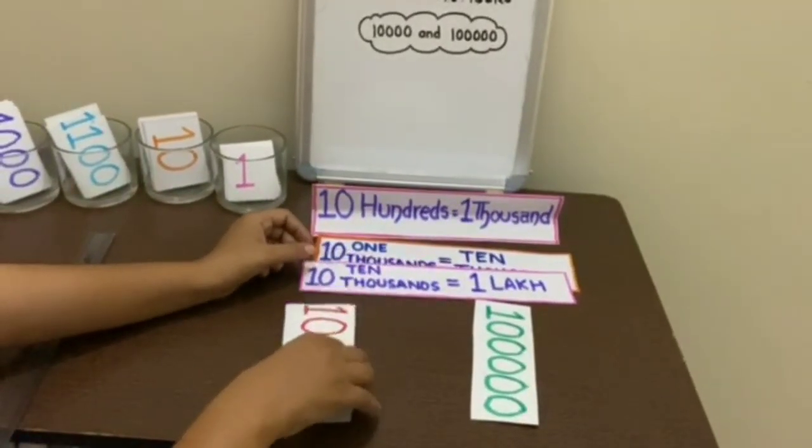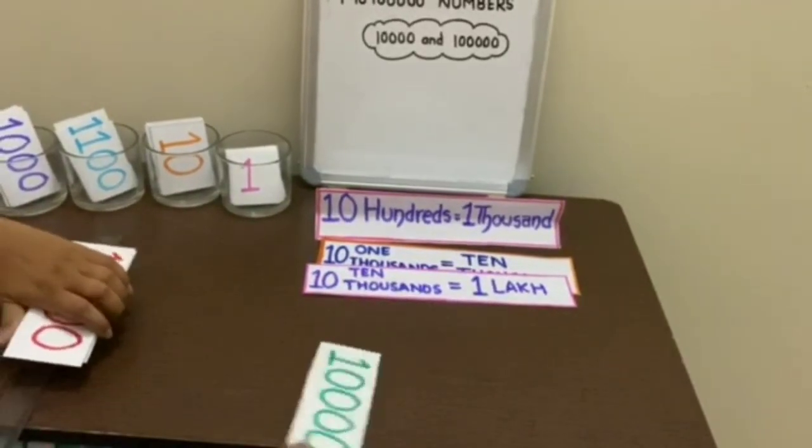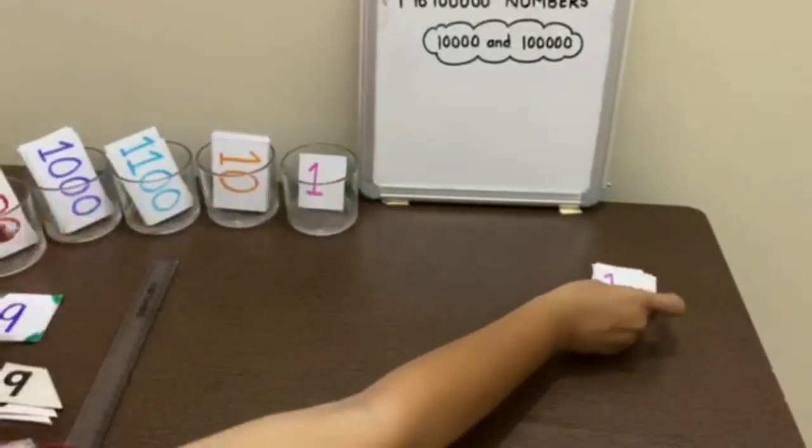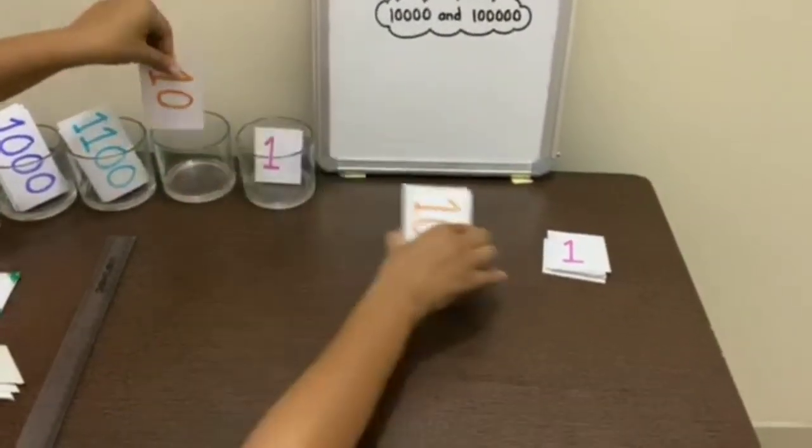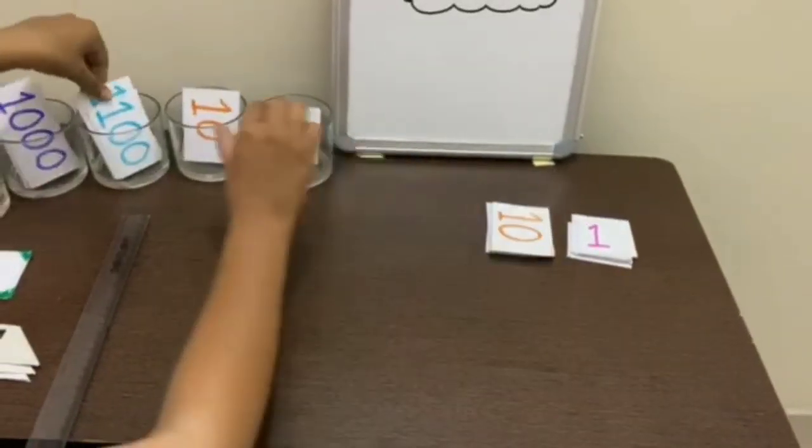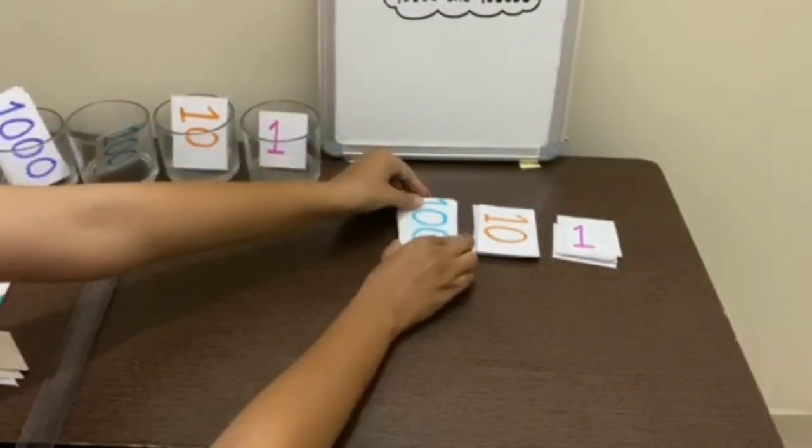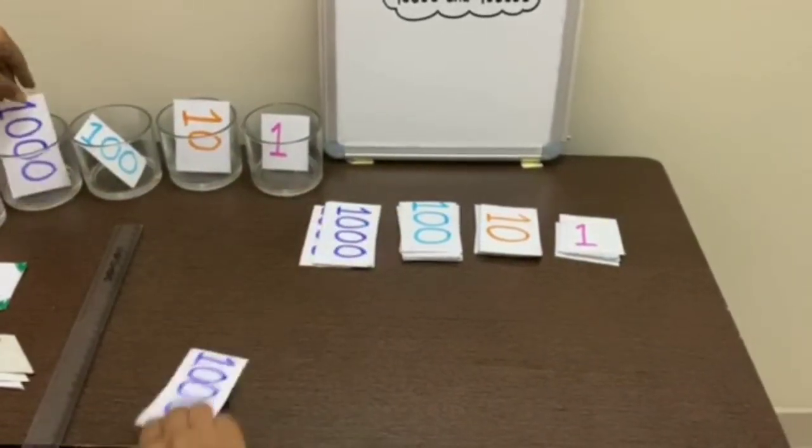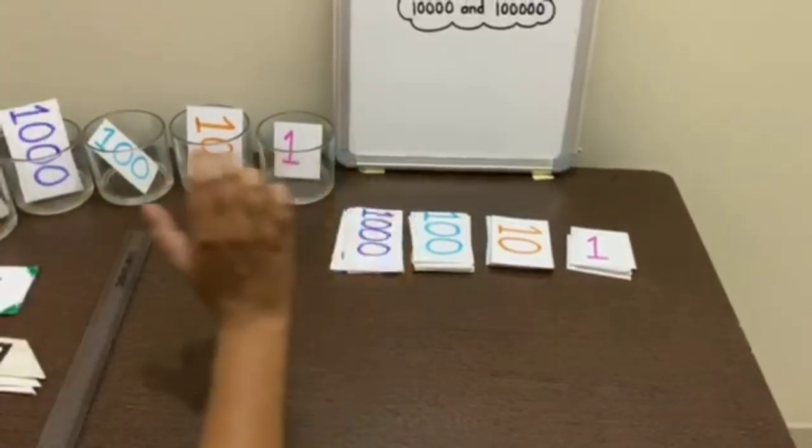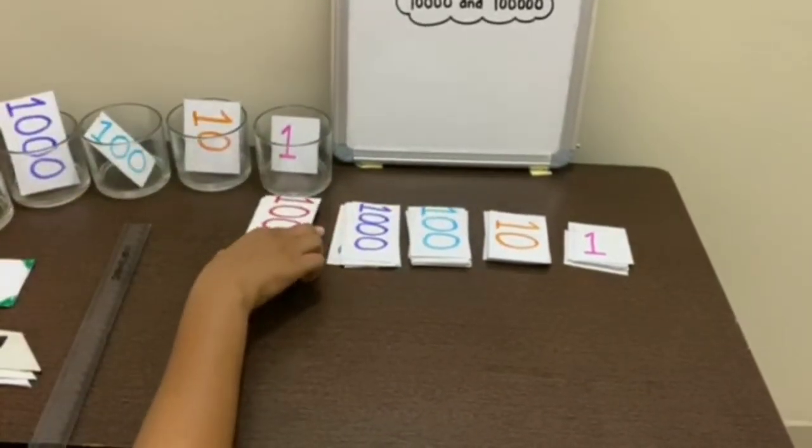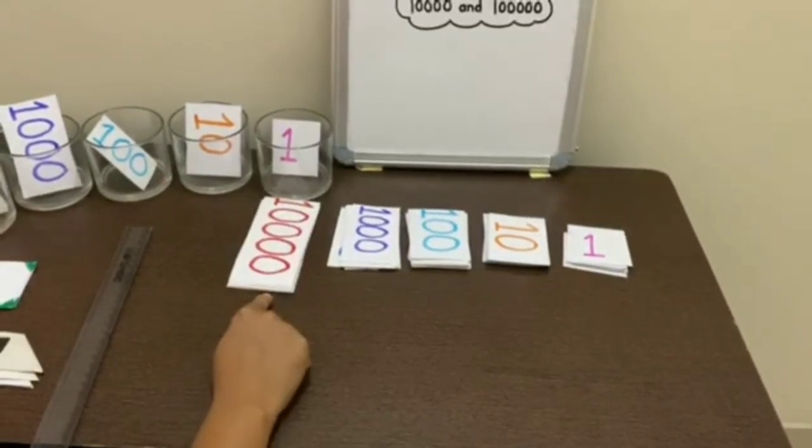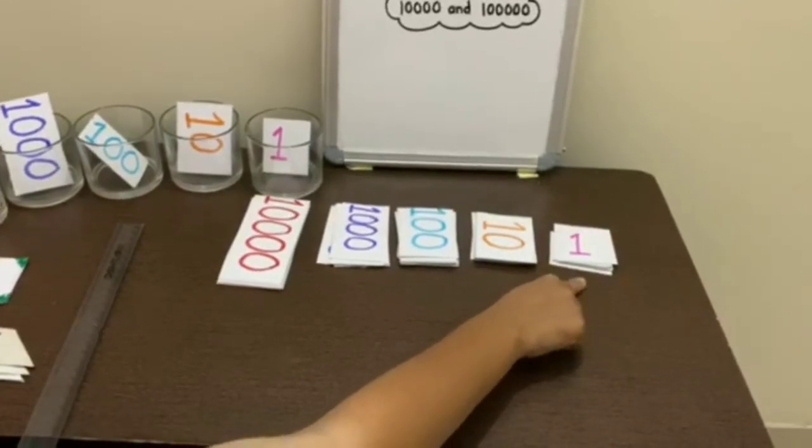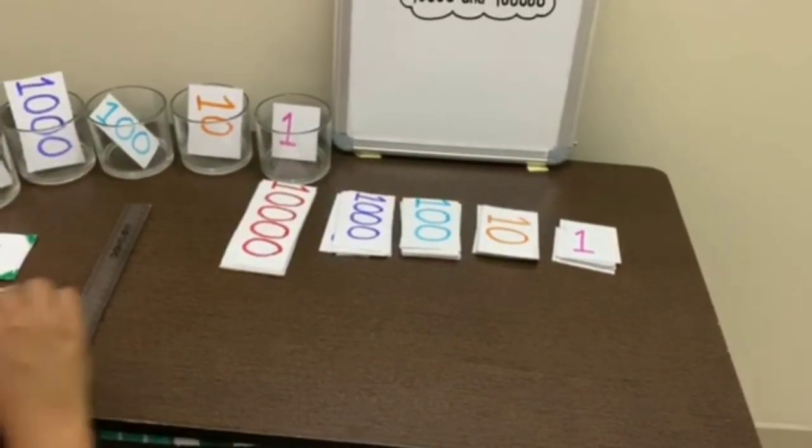To learn this, we will take an example. We will take 9 flashcards of 1, 9 flashcards of 10, 9 of 100, 9 of 1,000, and 9 of 10,000. So it is 99,999. We will see this figure on number cards.